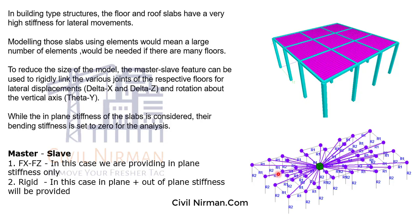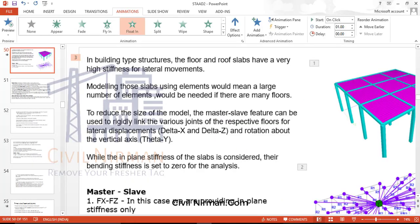When there is a cutout in the plane of the slab, we have to judge whether the slab is providing enough stiffness to the beam-column framing or not. If it is providing enough stiffness, then and only then we can provide the master-slave command. I have a model here — let me show you how it will look in the actual structure.